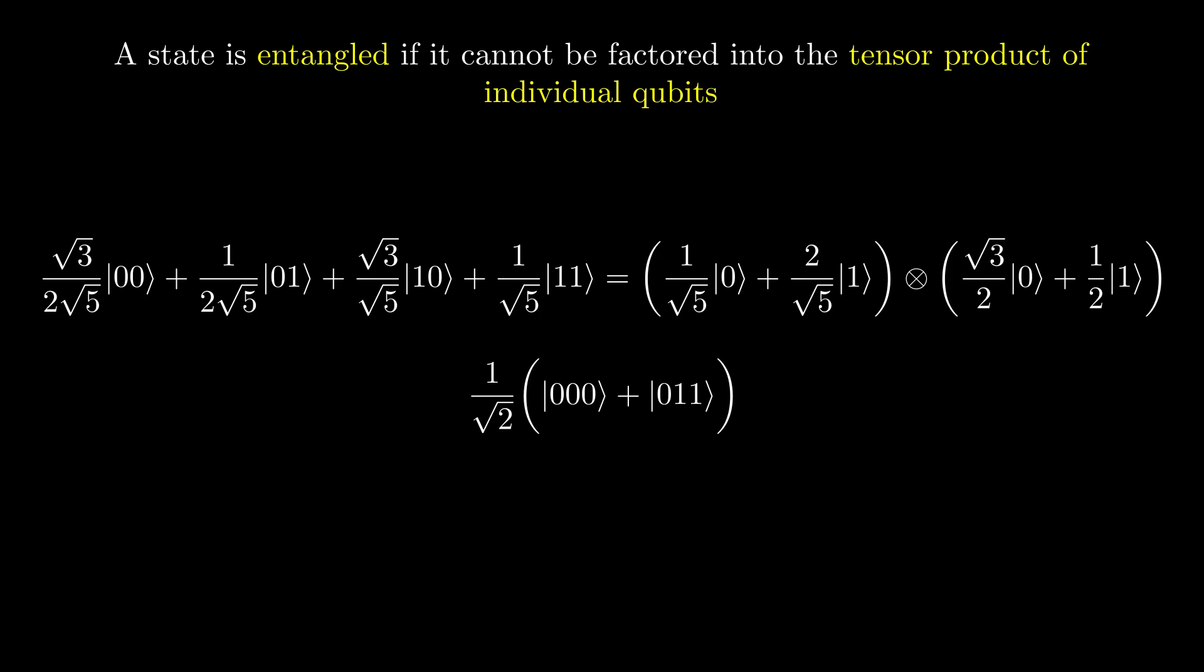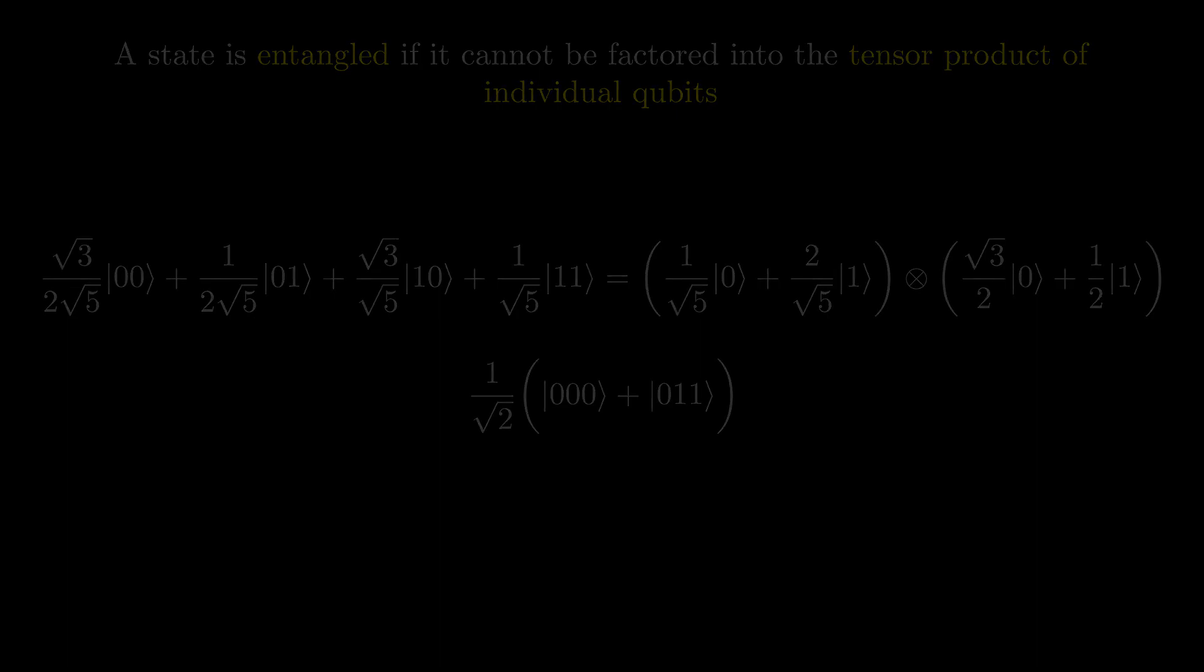What this means is that when the qubits are entangled, they depend on each other to determine their state. There are two types of entangled states, maximally entangled states and partially entangled states.